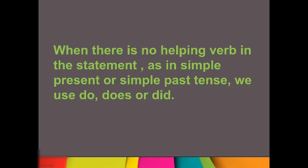And when there is no helping verb in the sentence — jaisa ki hota hai simple present aur simple past tense mein — in that case we use do, does, or did. But kaise use karenge kab? Do use karenge kab? Does, and did — let us see. It's very simple, students, but you have to listen carefully.